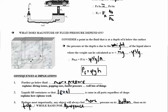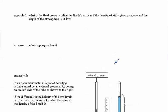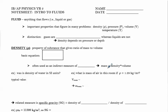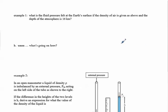Let's look at two quick examples. Problem one: what is the depth of fluid pressure on the Earth's surface if the density of air is given as above? And that's a previous problem. So if we go to this page, that was 1.29 kilograms per cubic meter.